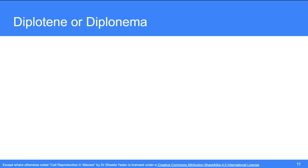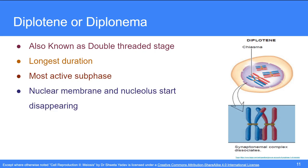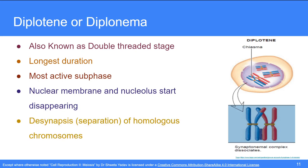Next is the Diplotene or Diplonema stage, also known as the double-threaded stage. It is the longest and most active subphase of prophase 1. Here the nuclear membrane and nucleolus start disappearing. Desynapsis — the separation of homologous chromosomes — begins due to dissolution of the synaptonemal complex, except at the chiasmata. Terminalization of chiasmata begins as they start moving towards the ends of the chromosomes.